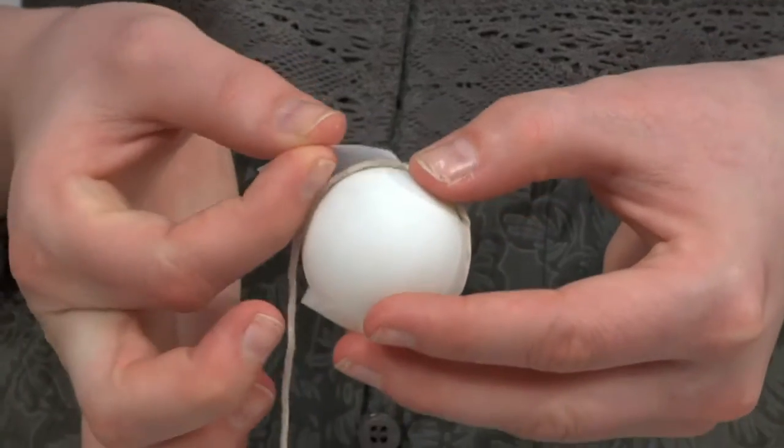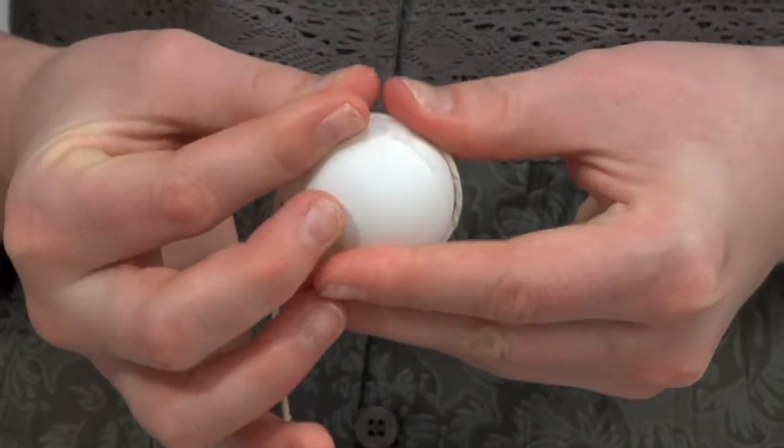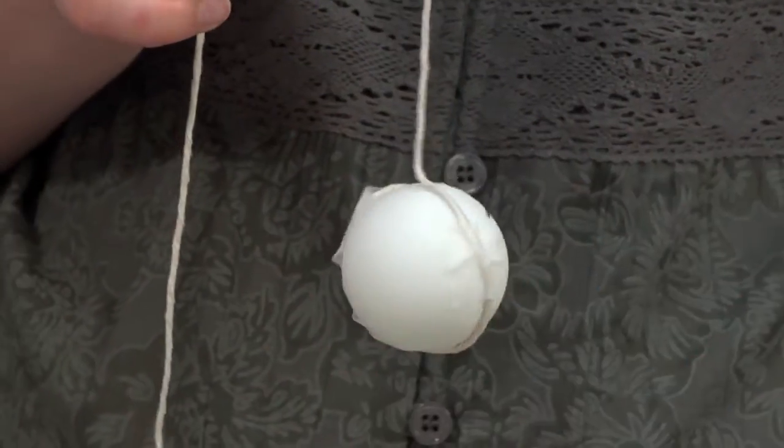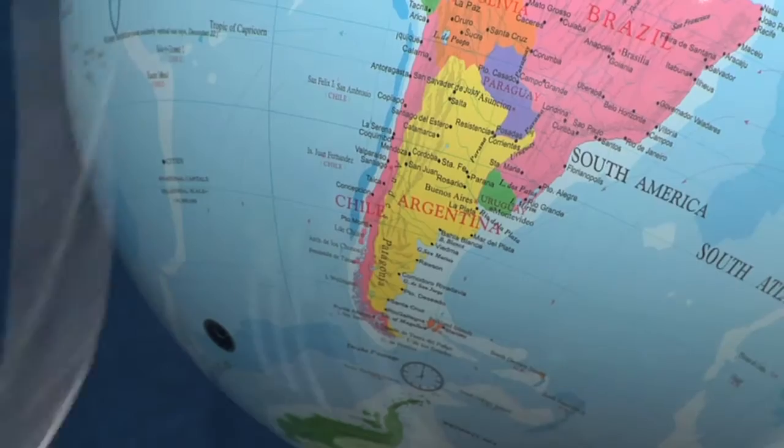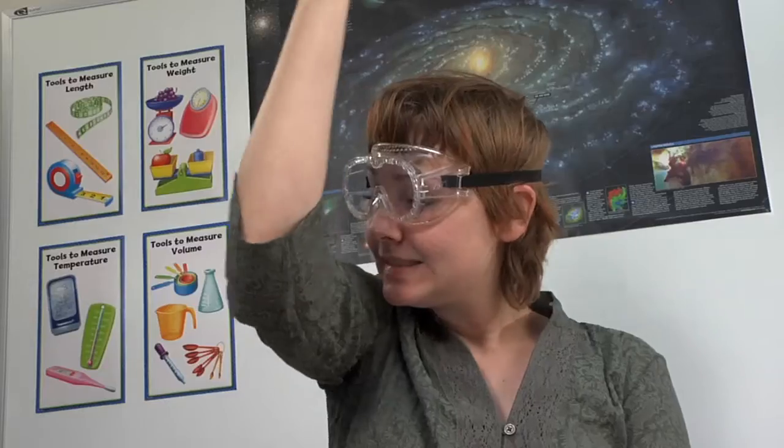To test the principle of inertia that a body in motion tends to stay in motion, tape the ball and string together and whirl it around in the air. After a few seconds, let go of the string and record what happens to the ball. This might be one for the great outdoors.